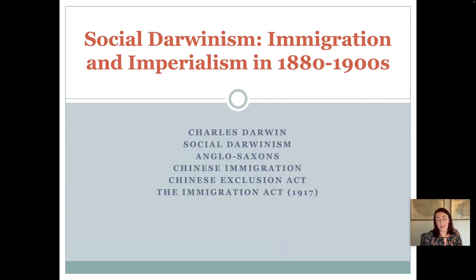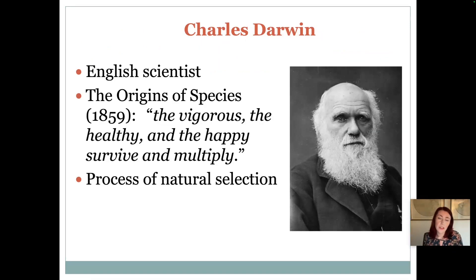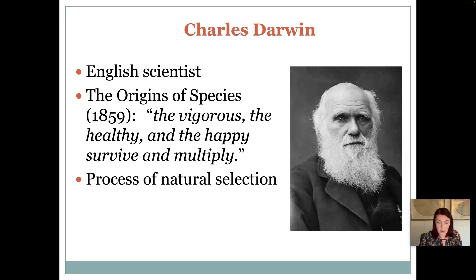Before providing a strict definition of social darwinism, we need to understand its roots and origin. You may recognize the word 'darwinism' because of the English scientist Charles Darwin, who was active in the 19th century. In 1859 he published the then-controversial book 'On the Origin of Species,' which had very deep and profound consequences on science, politics, and societies in America and Europe.